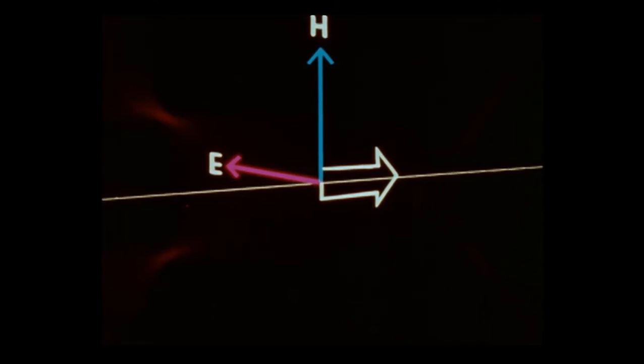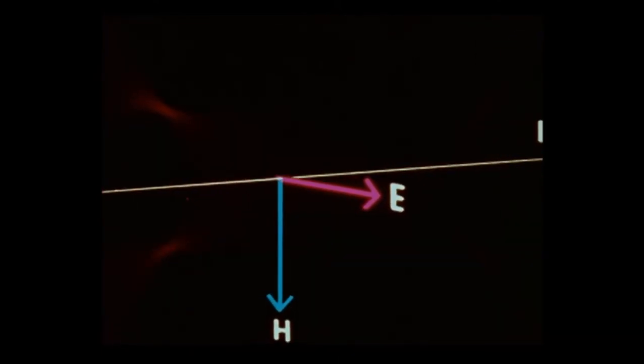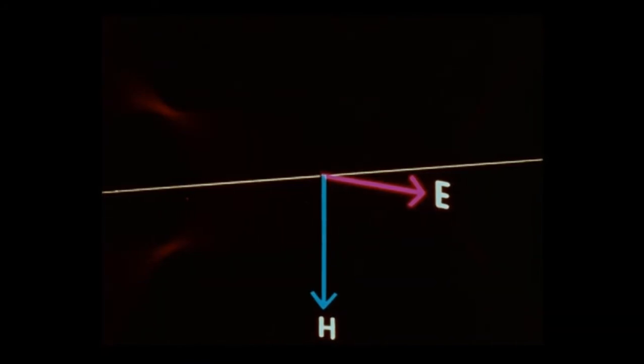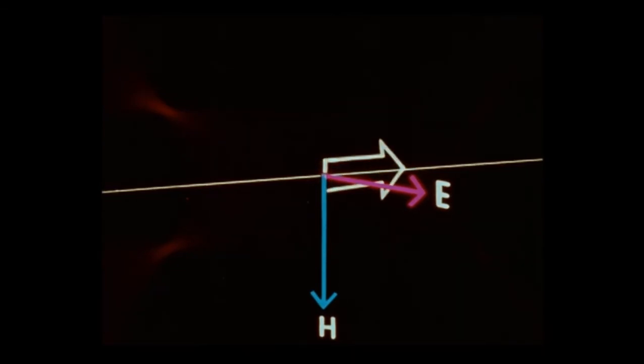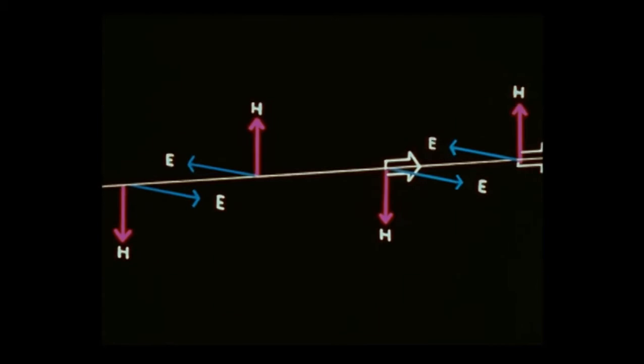In the next half cycle, the E and H vectors reverse. Applying Poynting's rule again, we see that the direction of propagation is unchanged. Although we have considered only peak vectors, any vector pair would give the same direction of propagation.